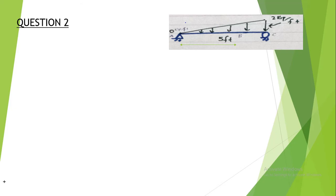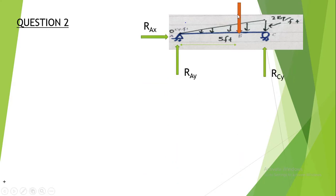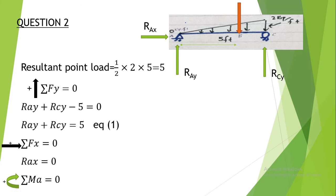Now for Case 2 — a simply supported beam subjected to a VDL. We follow the same steps as before. First, we convert the VDL into a concentrated point load by calculating the area of the triangle. There are three reactions for this case as well. The magnitude of the resultant load equals the area of the triangle: ½ × base × height = ½ × 5 × 2 = 5 kips.